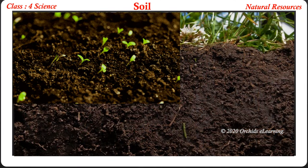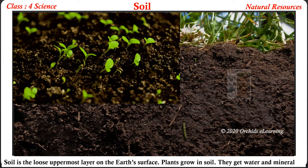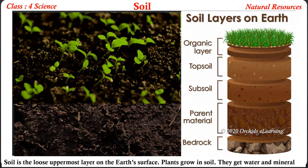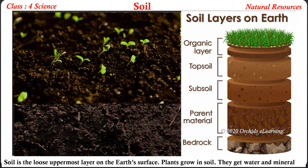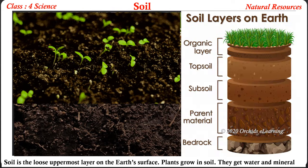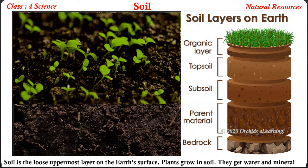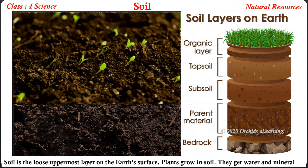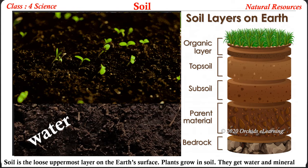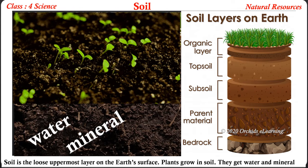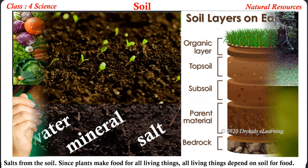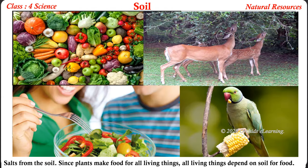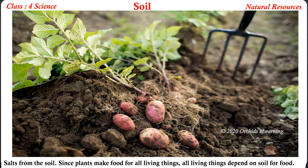Soil is the loose uppermost layer on the earth's surface. Plants grow in soil — they get water and mineral salts from the soil. Since plants make food for all living things, all living things depend on soil for food.